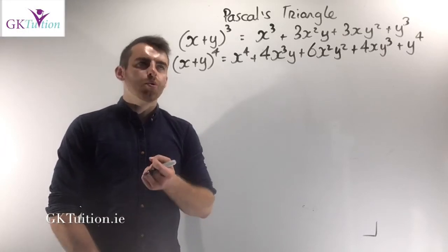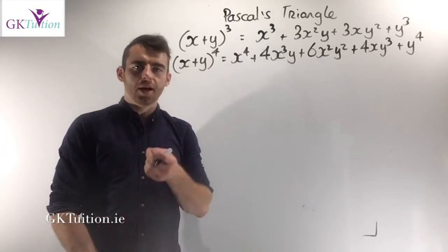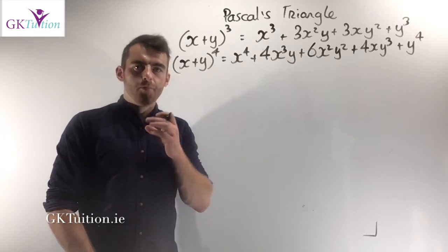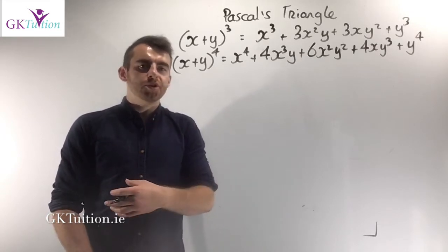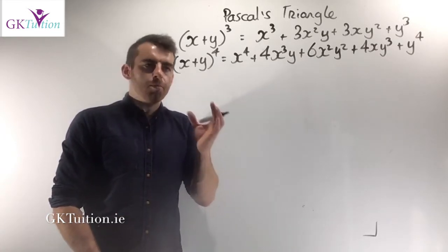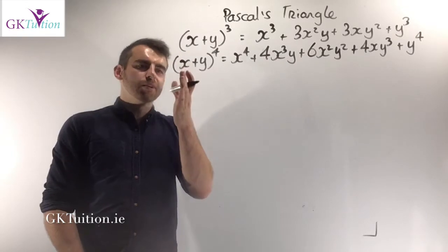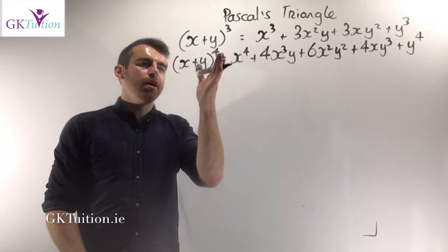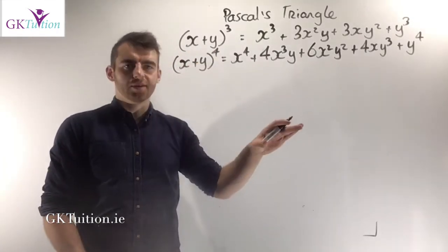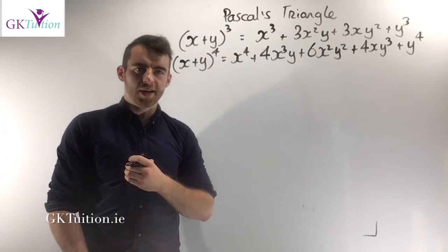In the next two videos, we're going to look at Pascal's Triangle and the Binomial Theorem. Both of them do the exact same thing - they will allow you to get something like x plus y to the power of 4 and just write out the answer, rather than actually multiplying it out.